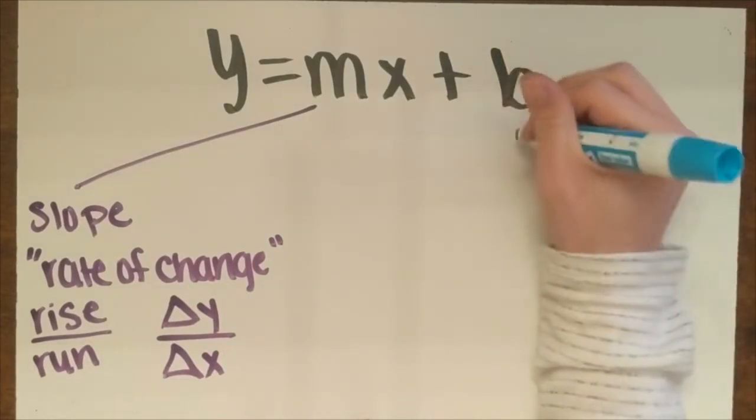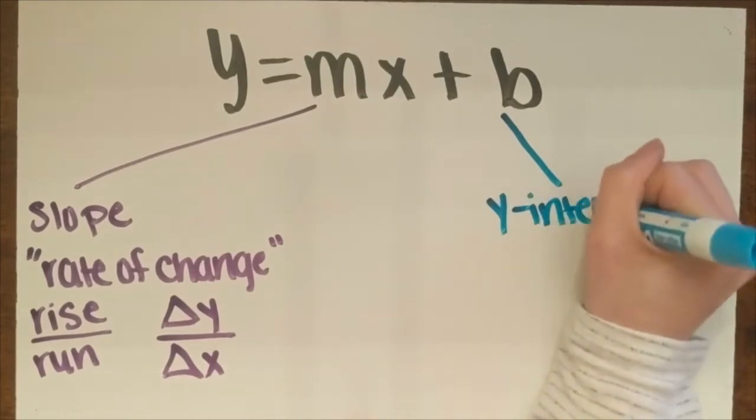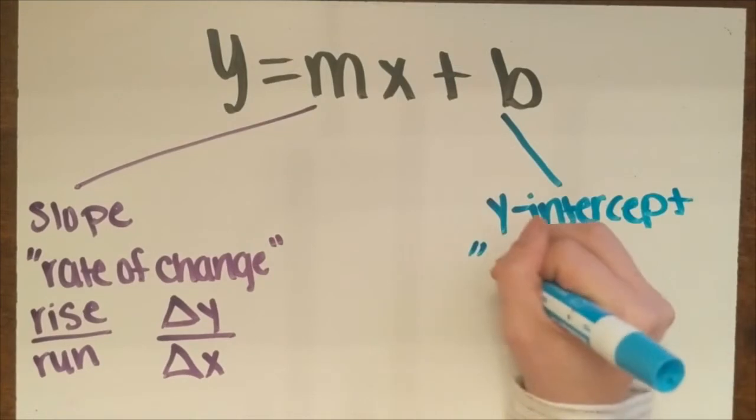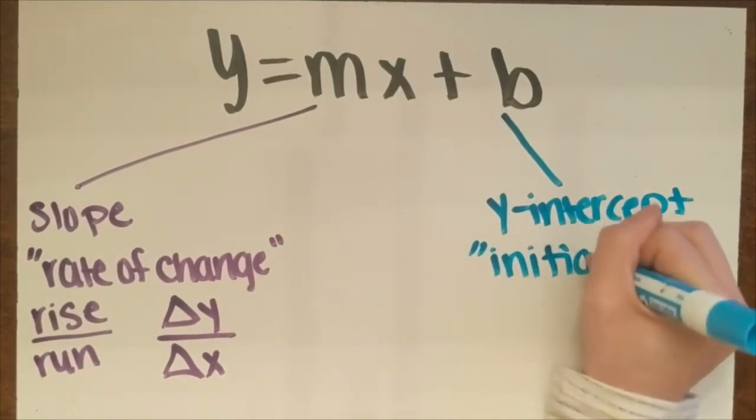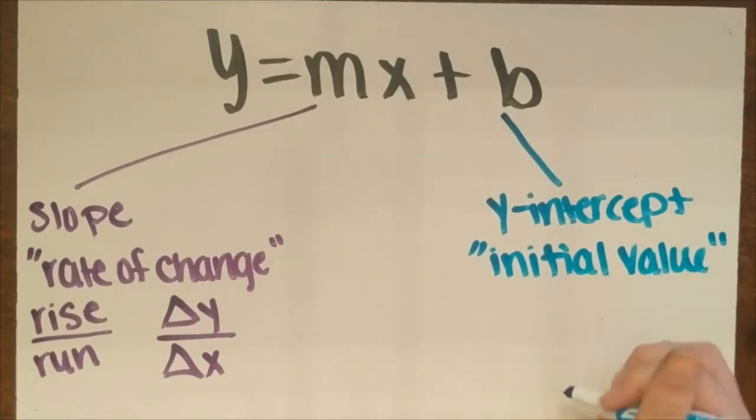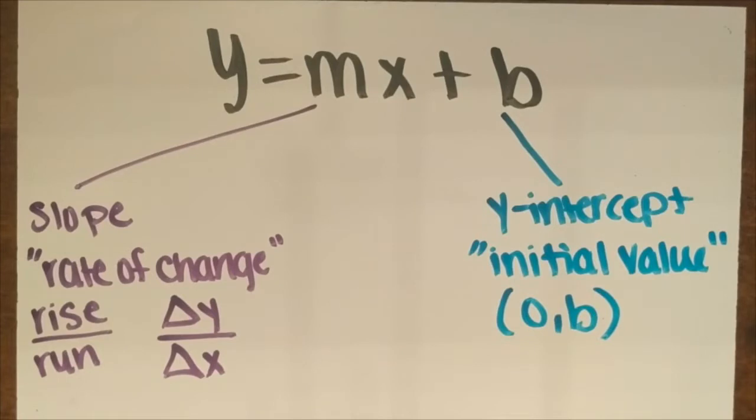The next variable we're going to look at is our y intercept. B represents our y intercept and is referred to as our initial value. Now on a graph and a table, our y intercept is at the ordered pair 0, b. On a graph, this is where our line crosses the y axis forming the ordered pair 0, b. And on a table, it's where the x value is 0.